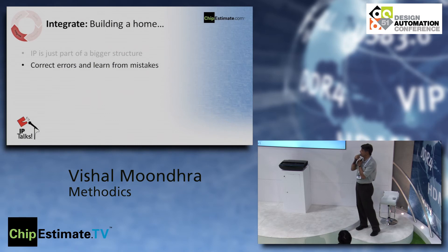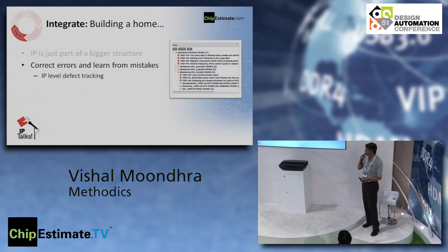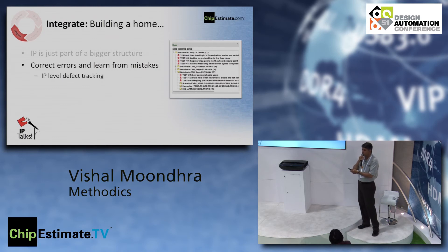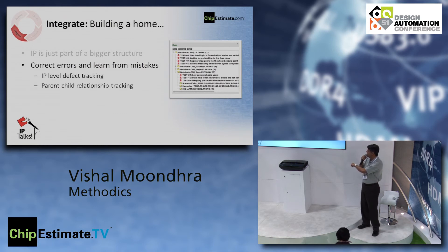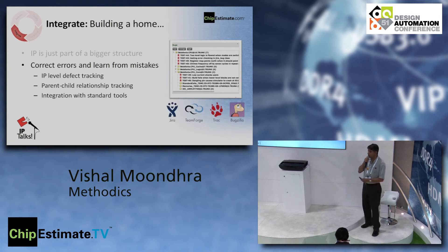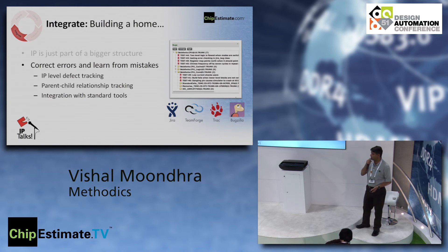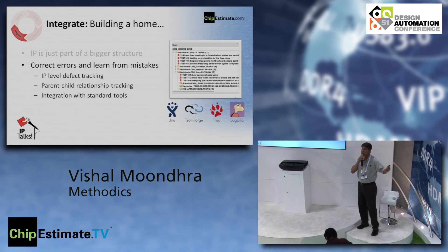The integrate step also requires the IP to correct its errors and learn from its mistakes. It's not sufficient only to bring in the IP — you also need to know what bugs you're bringing in. When you build an SOC with a bunch of IPs, it's not enough to know you got version A; you need to know the bugs associated with that version. We have integrations with standard bug tracking tools like Jira and Bugzilla, and we can show bugs in the context of your use. If a CPU's core has bugs, those bugs are visible in context — and if you change the version of the core, you get the bugs associated with that version.